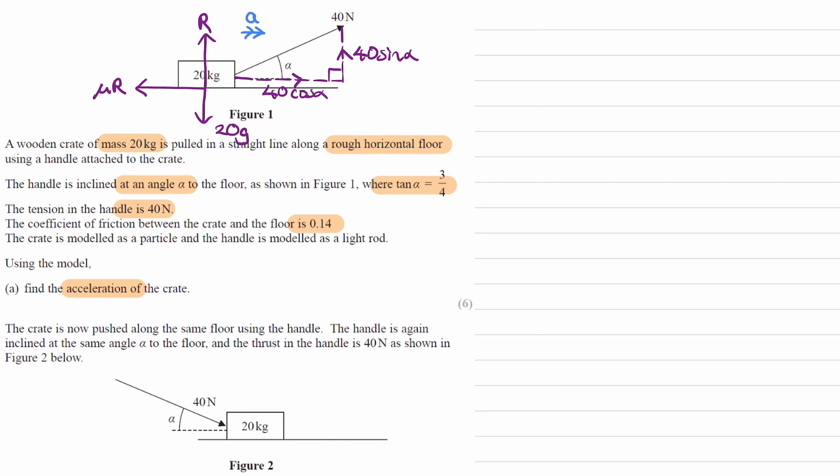Let's first work out what sin alpha and cos alpha are. Right angle triangle, this is alpha, this is 90, opposite is 3, adjacent is 4, hypotenuse will be 5 using Pythagoras. Sin alpha is opposite over hypotenuse, so 3/5, and cos alpha is adjacent over hypotenuse, so 4/5.